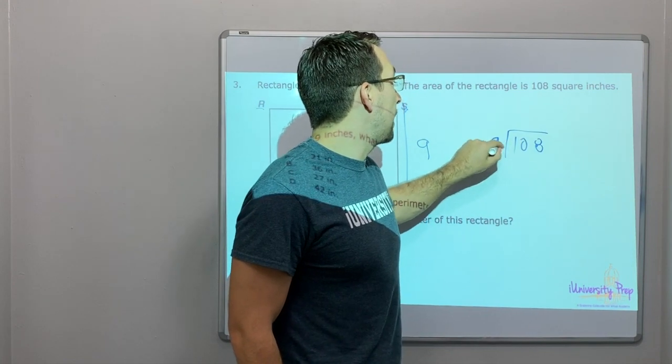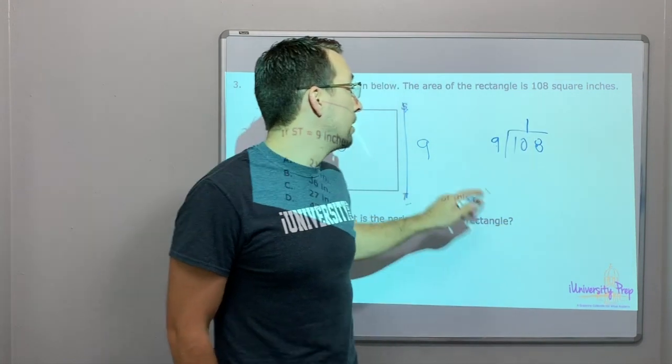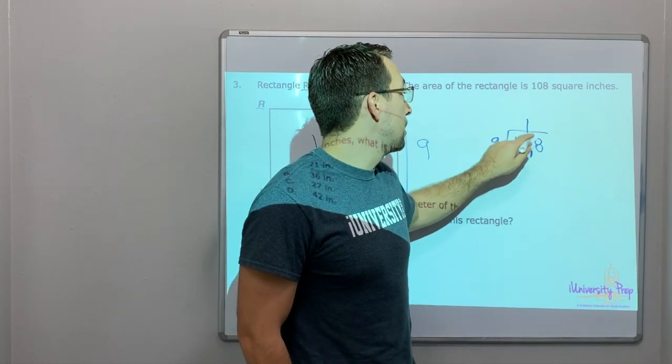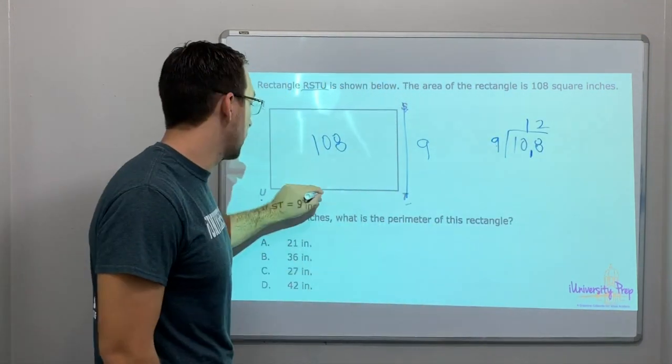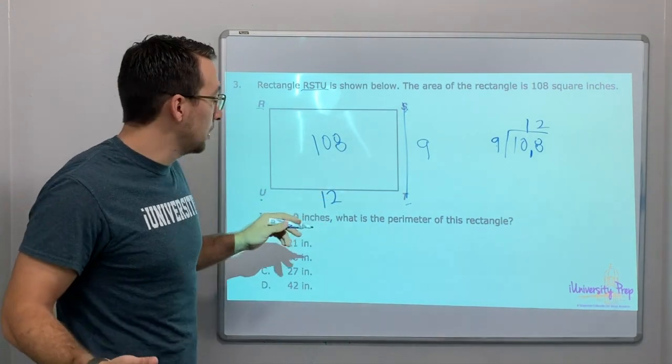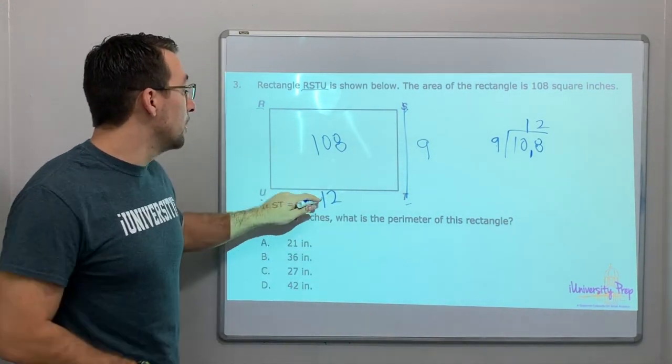12 times 9 is 108. Now we can find the perimeter because we know it's a rectangle, so this side is 12 and this side is 9.